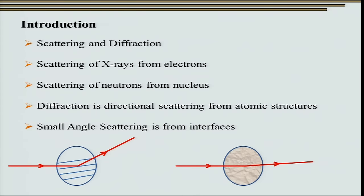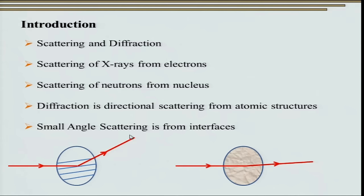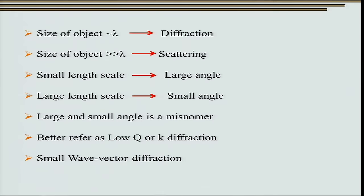As discussed earlier, interaction of photons with matter can lead to scattering as well as diffraction. Scattering of X-rays is essentially from electrons, while scattering of neutrons is from the nucleus. Diffraction occurs when incident X-rays or neutrons interact with lattice planes at a scale on the order of the wavelength, while scattering occurs at a higher length scale — and small angle scattering most of the time is from interfaces.